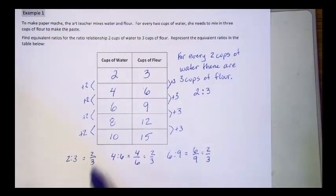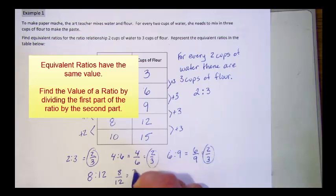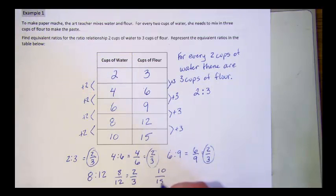So far, each ratio has had the same value. That's what makes something equivalent. If ratios are equivalent, then they have the same value. And if I finish this up, you see that all five ratios have the same value. So all five ratios are equivalent.